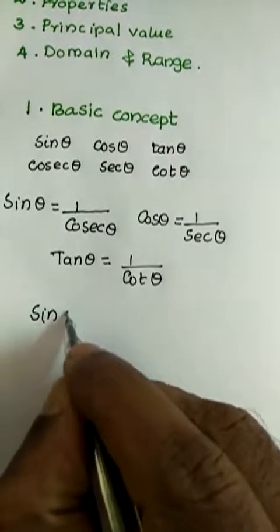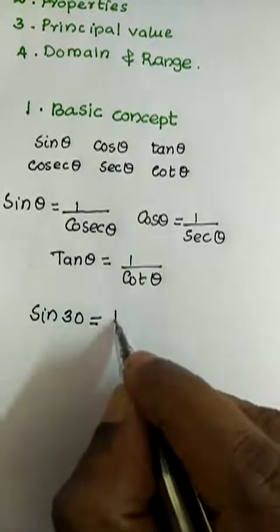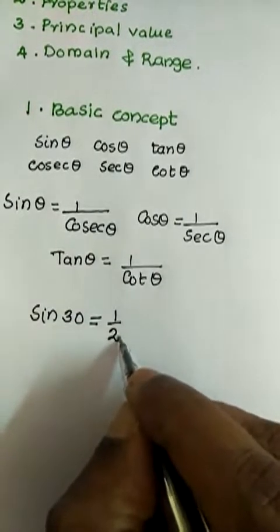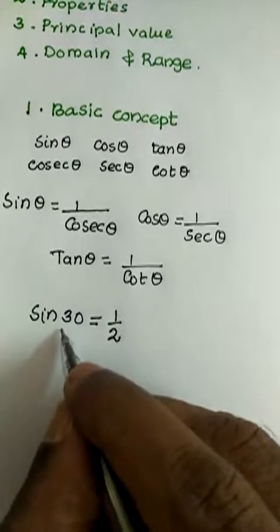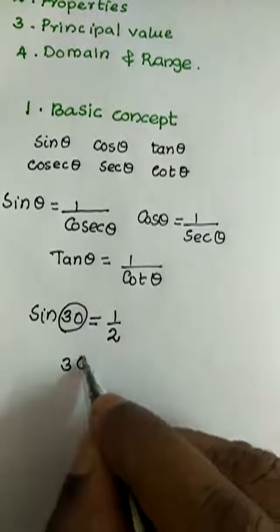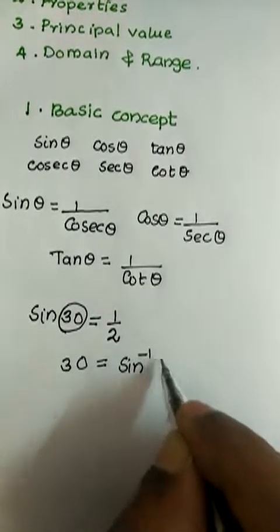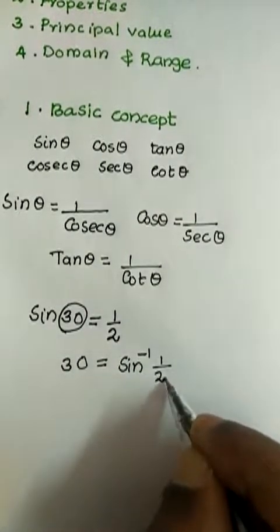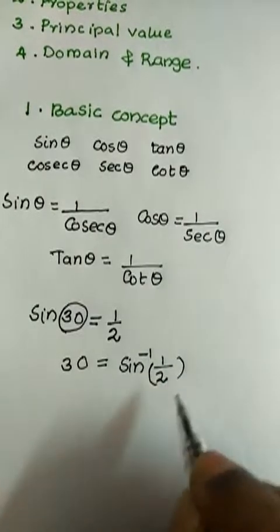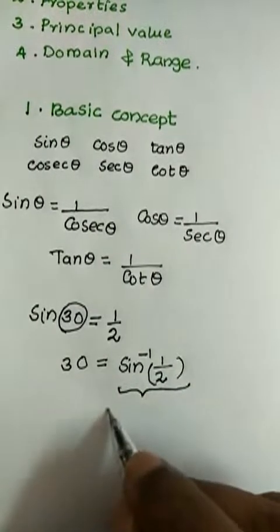We know that sine 30 is equal to half. Here the angle 30 degree can be written as 30 equals sine inverse half. This is the new function, inverse trigonometric function.